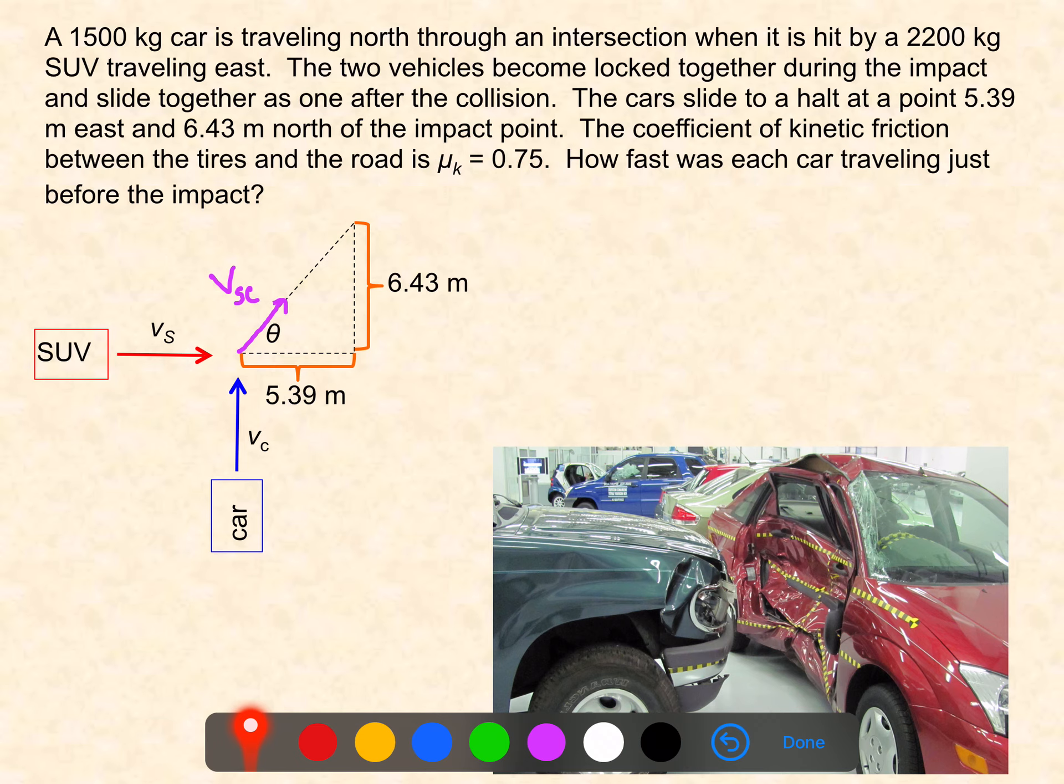What we would like to know is how fast each car was traveling before the impact. In solving this problem, there are three things that we don't know. We are told some information about the directionality here after the collision. Namely, we're given this x side and this y side of this right triangle.